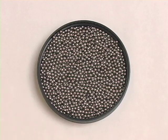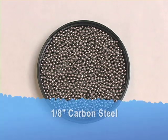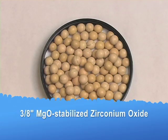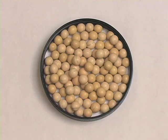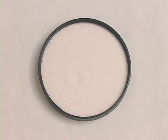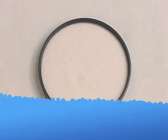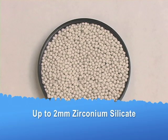For use in our own Attritor grinding mills, media size typically ranges from 1/8 inch, like this carbon steel, up to 3/8 inch, like this MGO stabilized zirconium oxide. For small media horizontal mills, much smaller media is required. For this application, media typically ranges from as small as 0.3 millimeters, like this zirconium oxide yttria stabilized YTZP, up to 2 millimeters, like this zirconium silicate.